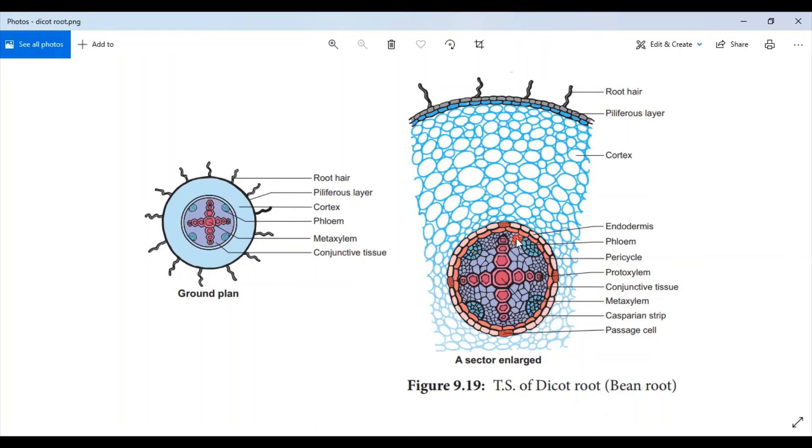The xylem is exarch. Protoxylem faces toward the periphery and the metaxylem towards the center. The number of xylem strands is four. Therefore xylem is tetrarch.